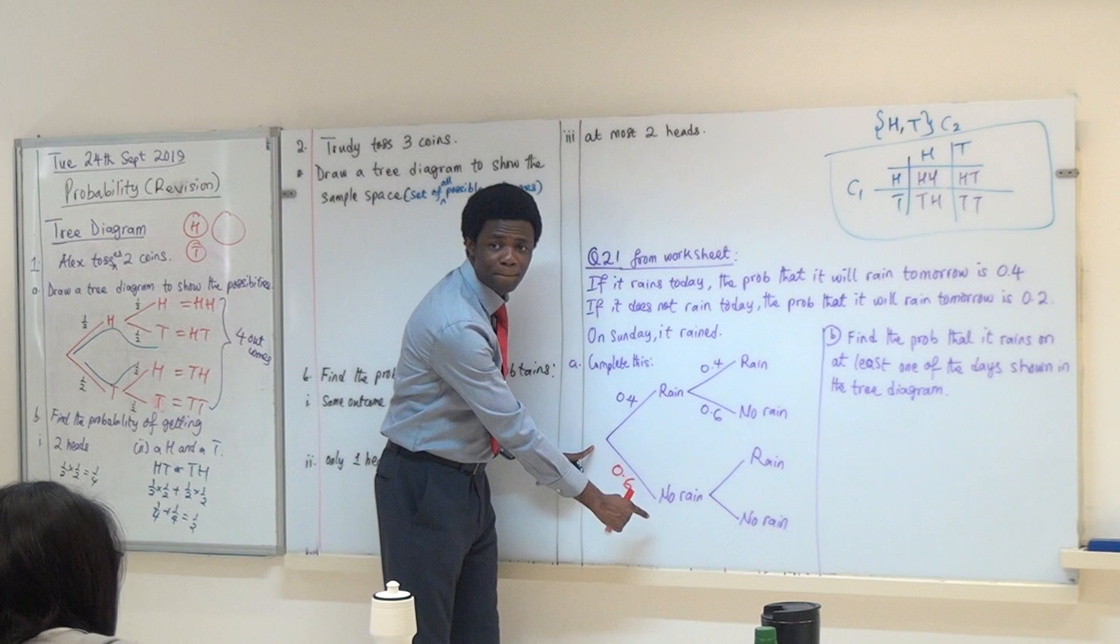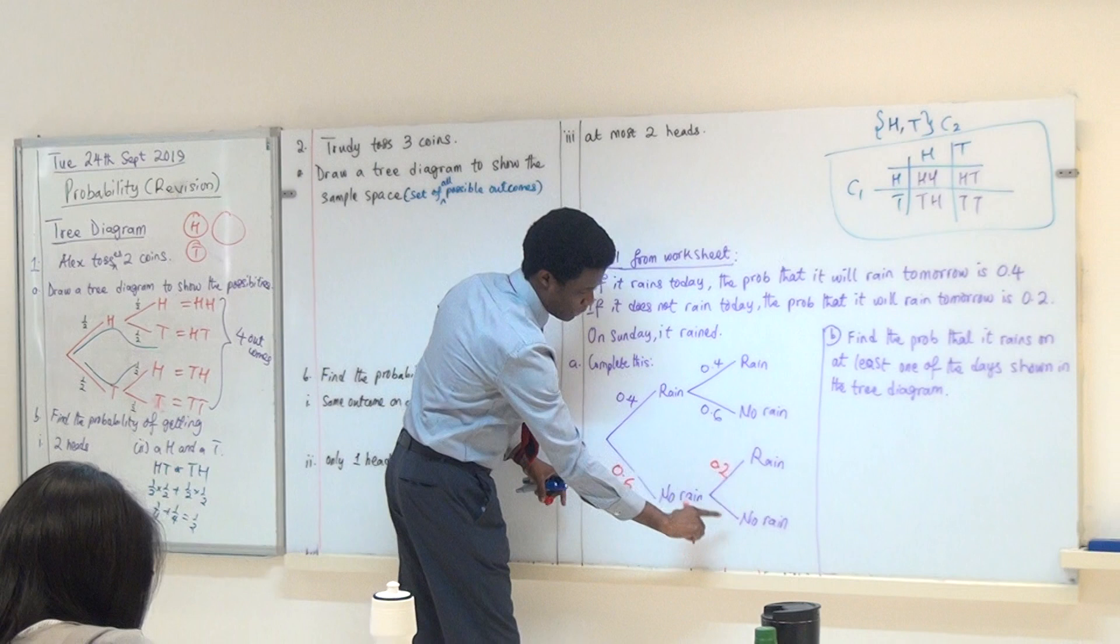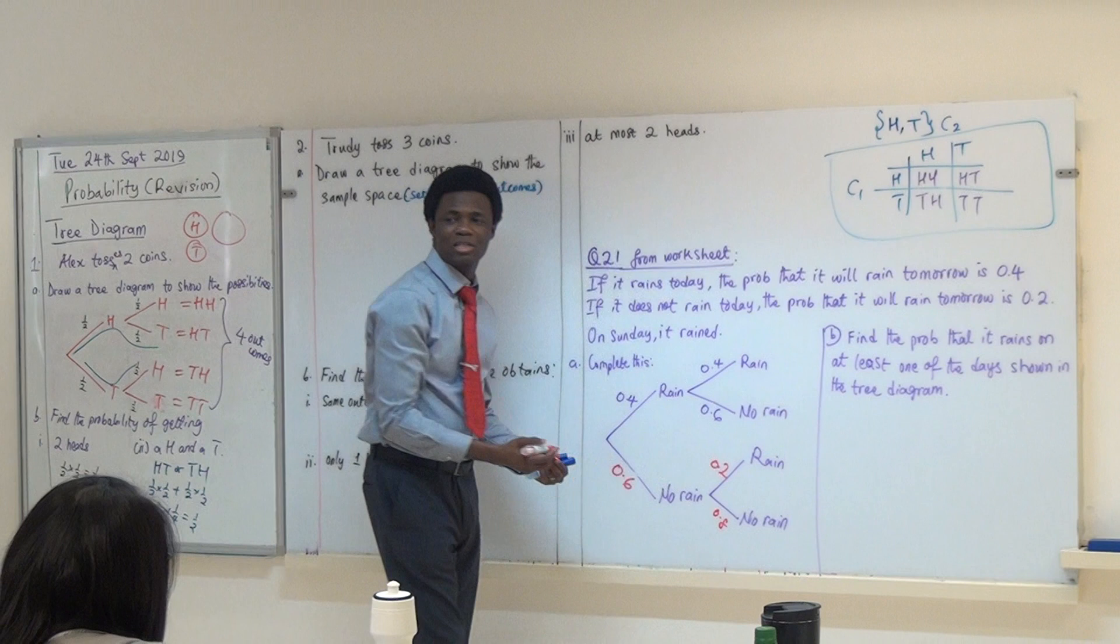Now, if it does not rain, which is going through this part. The probability that it will rain next is what? 0.2. That's this one. It does not rain. No rain. Okay? Then what about the probability that it will not rain again the next day? 0.8. 0.8. And that's all to complete it.